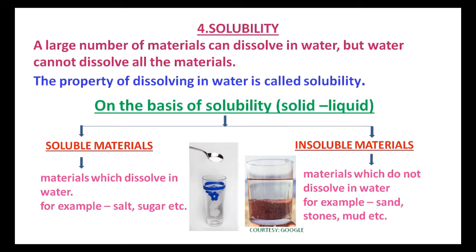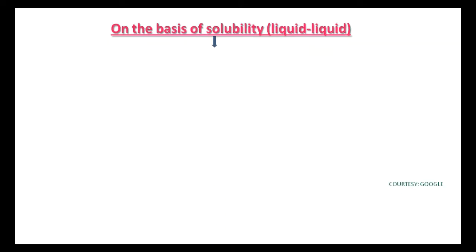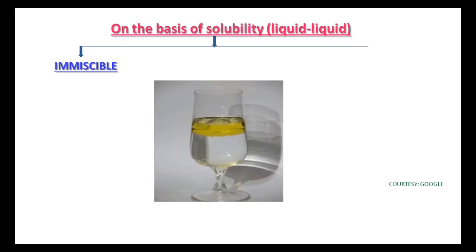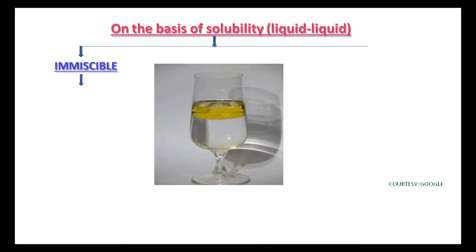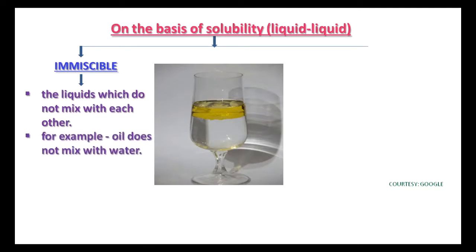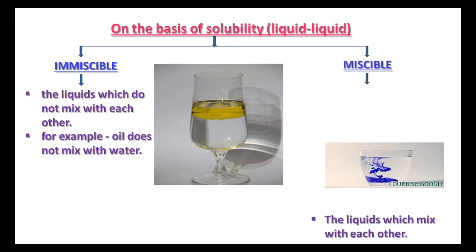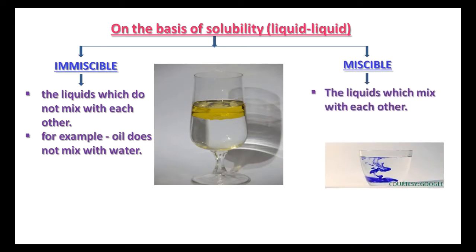On the basis of solubility of liquid in liquid, materials are immiscible and miscible. Immiscible means the liquids which do not mix with each other — for example, oil does not mix with water. Miscible means the liquids which mix with each other — for example, ink, milk, etc.